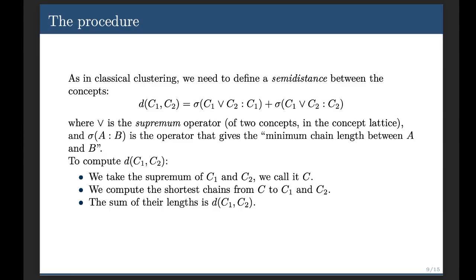How we measure it? Well, with the supremum operator, that is this kind of V between C1 and C2, this expression means that once we are given two concepts, C1 and C2, we take the supremum of both, let us call it C. So we take the supremum of C1 and C2 in the lattice, then we compute the shortest chain from this supremum to C1 and from this supremum to C2. So we have two chains of concepts from C to C1 and from C to C2.